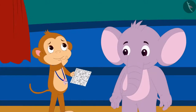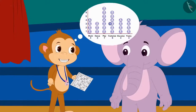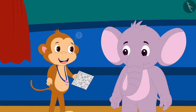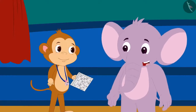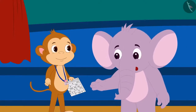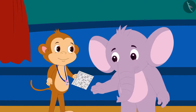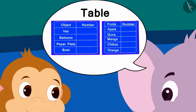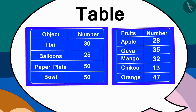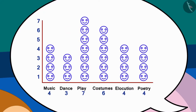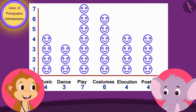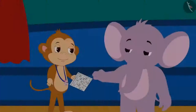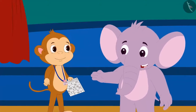Appu made symbols of faces on top of the names of each program and told Babban he could find out how many children participated in each program with the help of this pictograph. Babban couldn't understand — what is a pictograph? Appu explained: this is also a way to show information. Just like we enter information by writing numbers in a table, we can also show information using pictographs, and it is very easy to create.